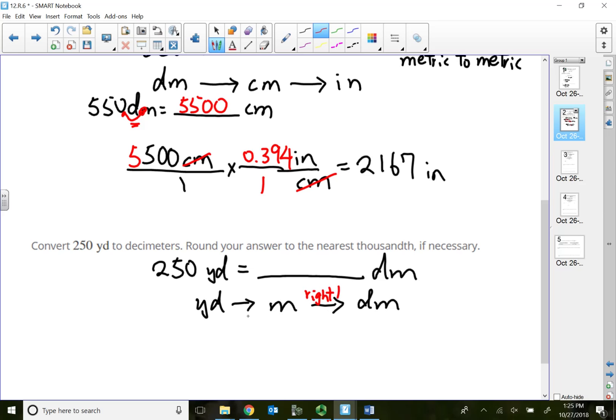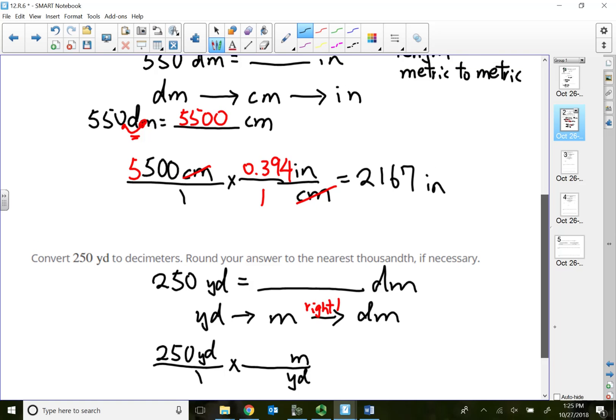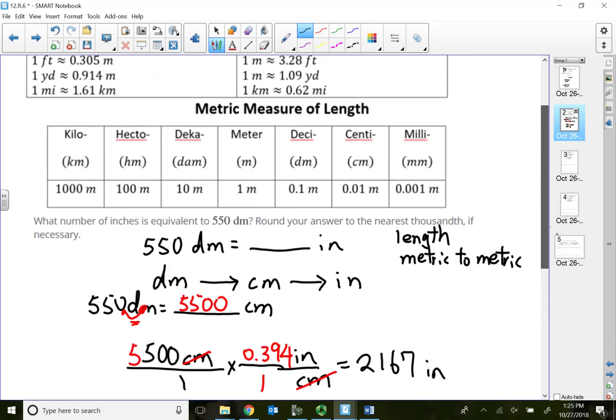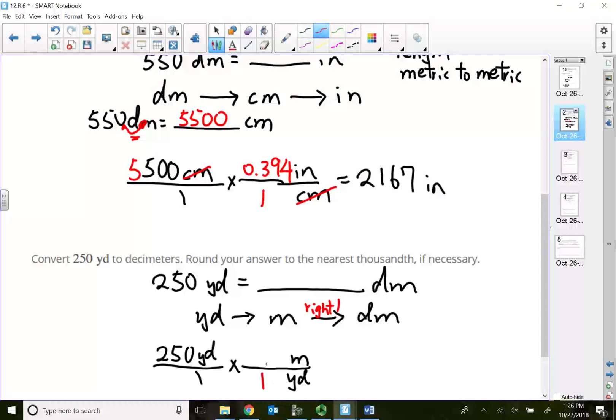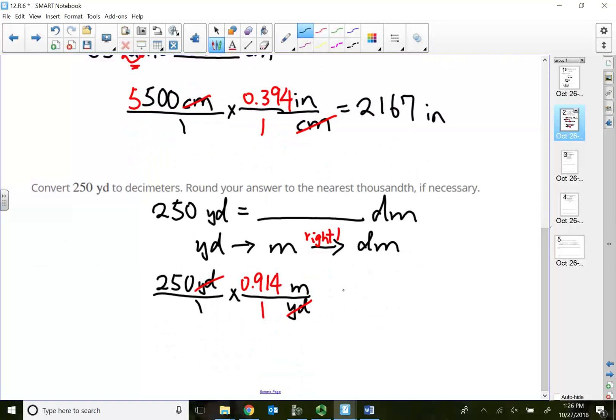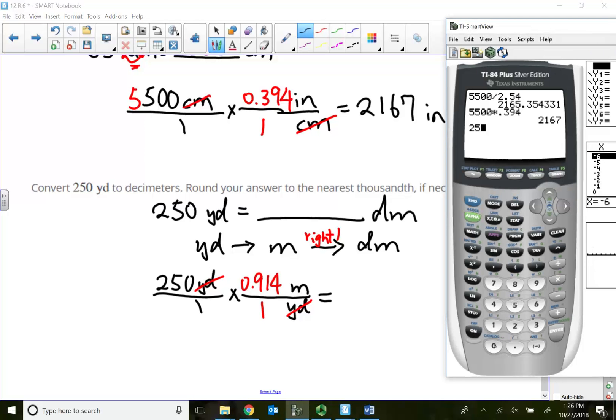Let's do the yard to meter first. 250 yards over 1, times put a yard down here, put my meter up top. My conversion says 1 yard for 0.914 meters. Yards cancel out, so once I multiply 250 times 0.914, that's 228.5 meters.